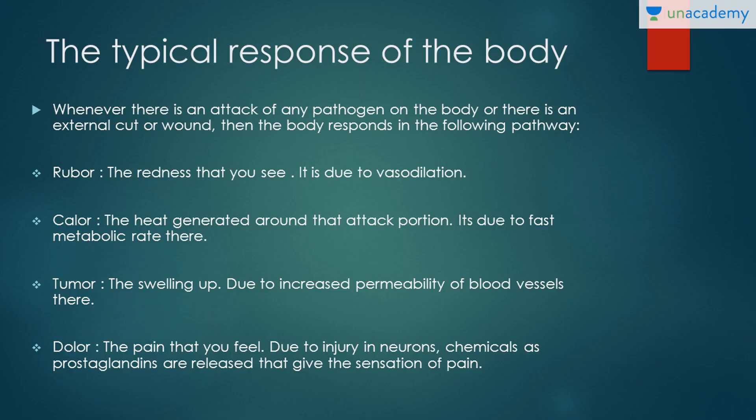What is the typical response of the body when it encounters a pathogen? Whenever there is an attack of any pathogen on the body, or there is an external cut or wound, the body responds in the following way. First, there is ruber — these are Latin or Greek terms. Ruber is the redness that you see, basically due to vasodilation. Vaso means your veins, and dilation means they dilate and spread up. More blood flows through that vein, causing the redness that appears on the skin — that is ruber. Then there is calor.